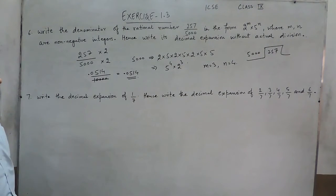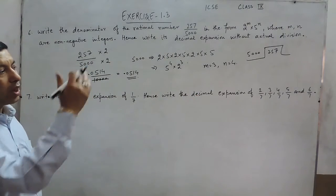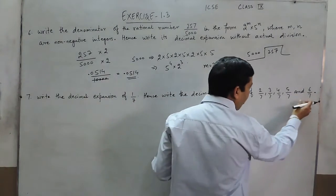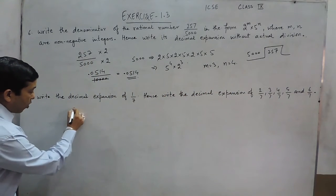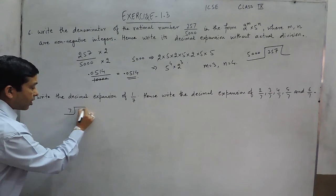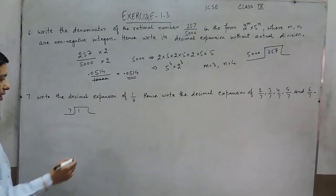Question number 7 is, write the decimal expansion of 1 upon 7, hence write the decimal expansion of all the other fractions having 7 in the denominator and less than 7 in the numerator. So when I actually divide 1 by 7, we have to understand what is happening in the process.